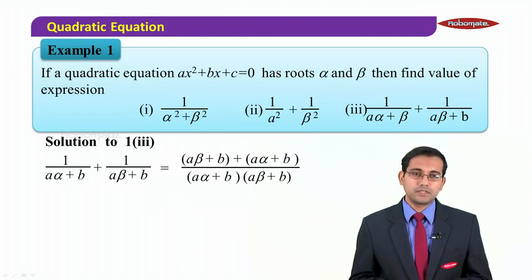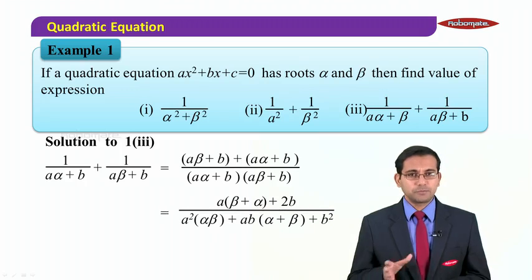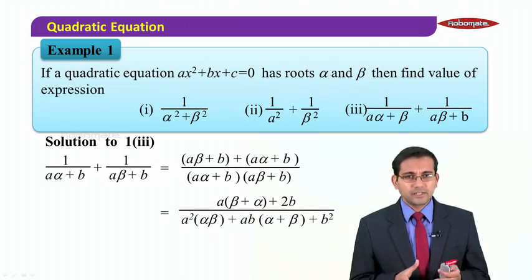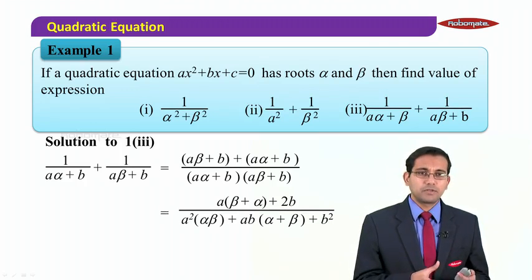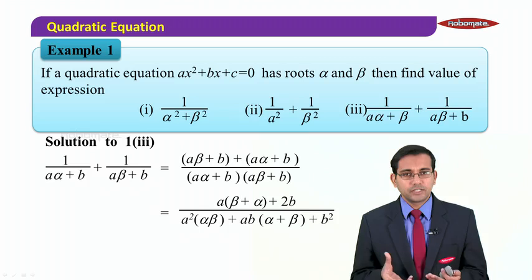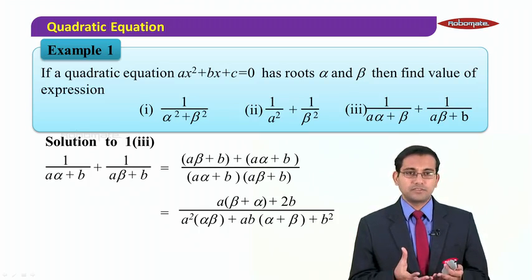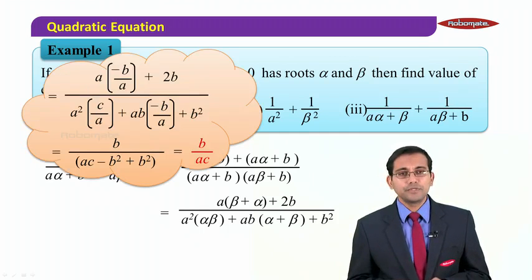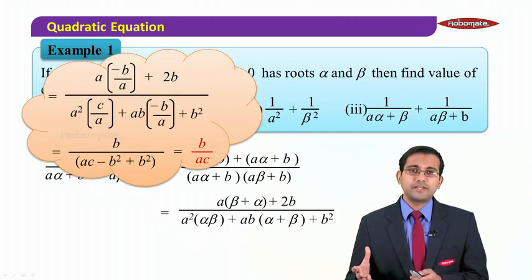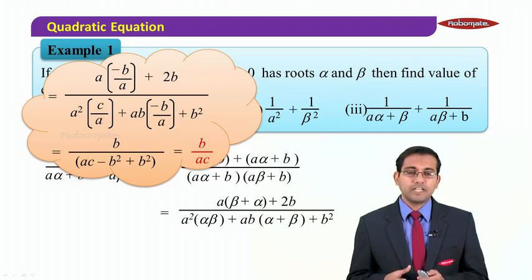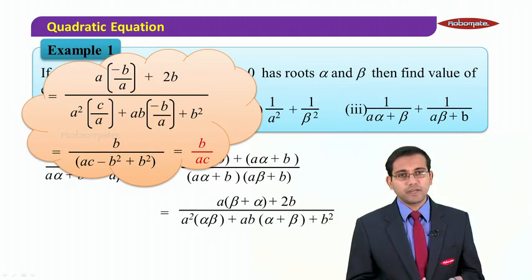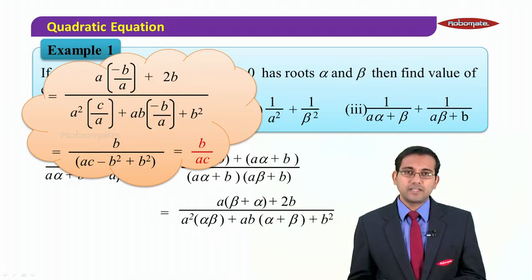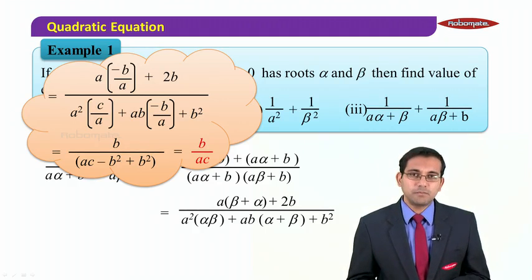Expanding the numerator and denominator: the numerator turns out to be a(α + β) + 2b, and multiplying out the denominator gives a²αβ + ab(α + β) + b². We then substitute α+β = −b/a wherever it appears, and αβ = c/a wherever that appears.